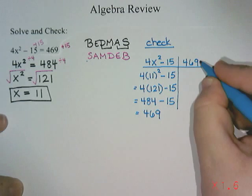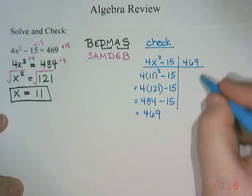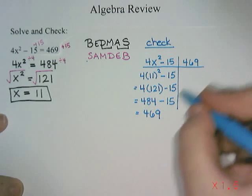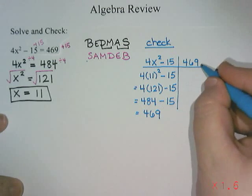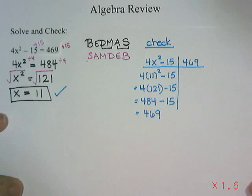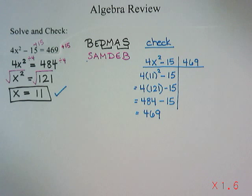On the right side there was no x — it's just 469. The two sides are equal, which means 11 is indeed the correct answer. And that's solving equations using exponents and opposite operations.